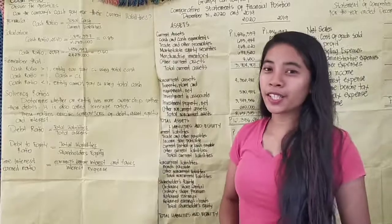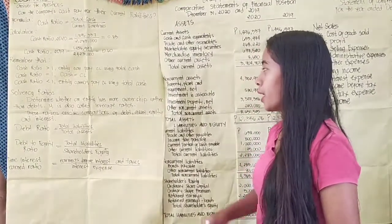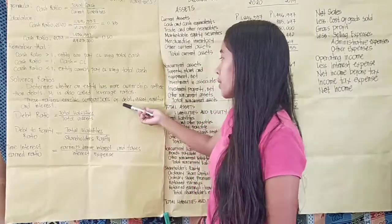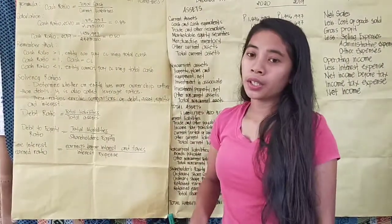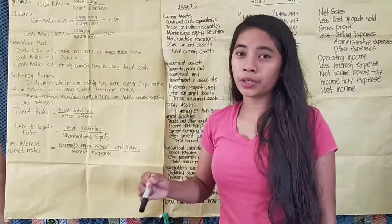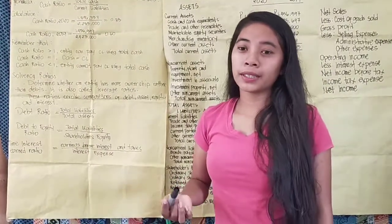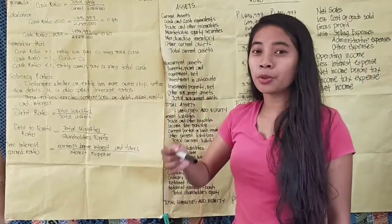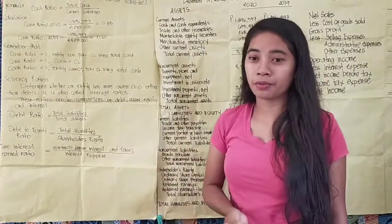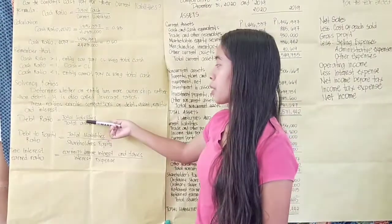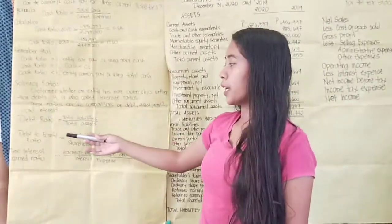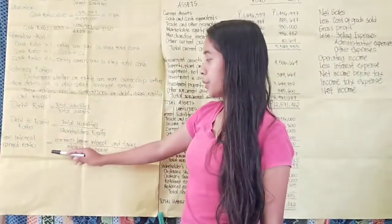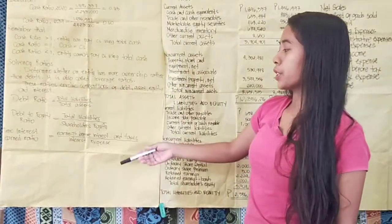Solvency ratios determine whether an entity has more ownership rather than debt. Also called leverage ratios, these involve comparisons of debt, assets, equity, and interest to determine how solvent the company is. The formulas are: debt ratio equals total liabilities over total assets; debt to equity ratio equals total liabilities over shareholders' equity; and times interest earned ratio equals earnings before interest and taxes over interest expense.